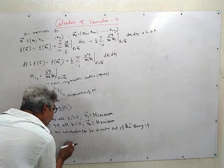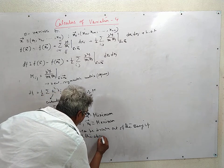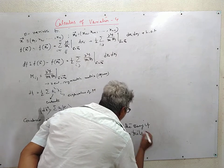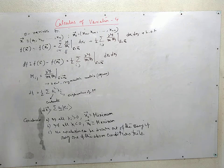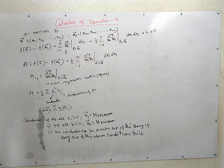If all eigenvalues λᵢ are positive, then df > 0 and x₀ is a minimum. If all λᵢ are negative, df < 0 and x₀ is a maximum. If some λᵢ are zero or of mixed sign, no conclusion can be drawn. In the next class we shall consider constrained variation using Lagrange multipliers, since constraint problems occur very frequently in physics and mathematics.